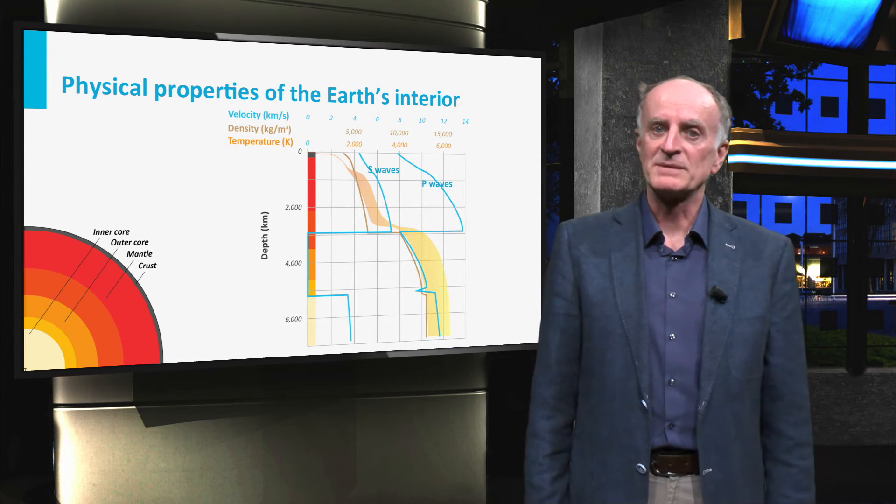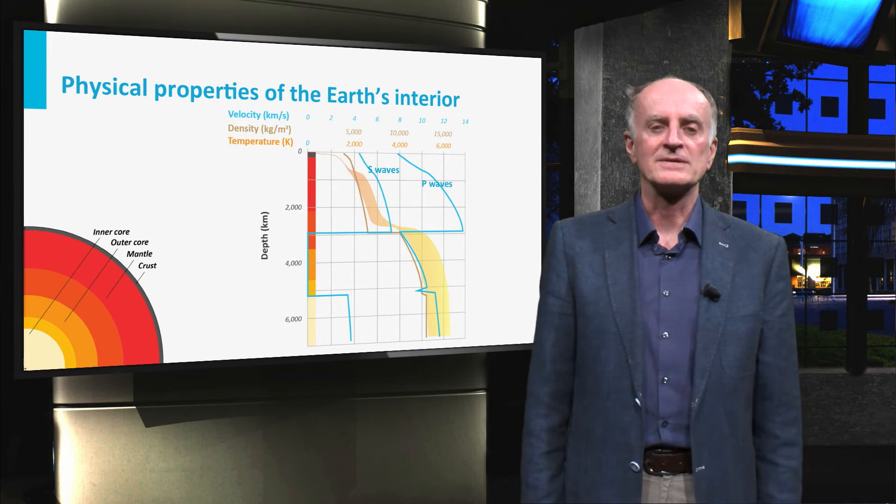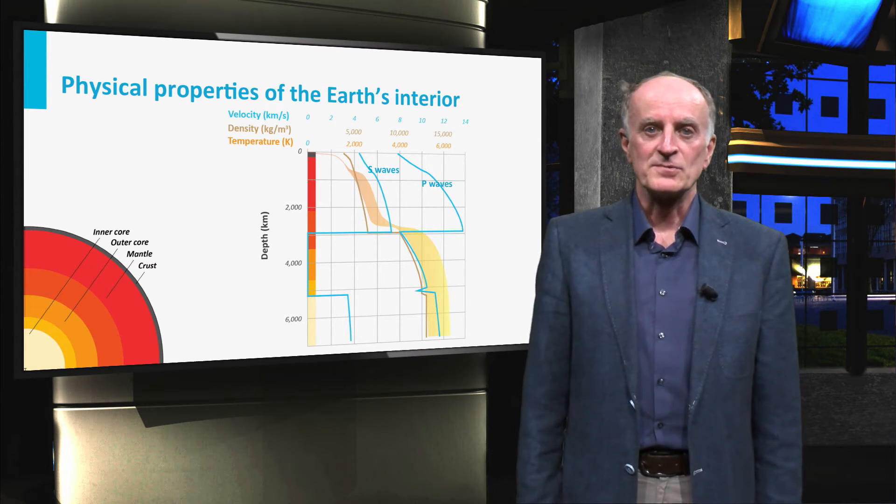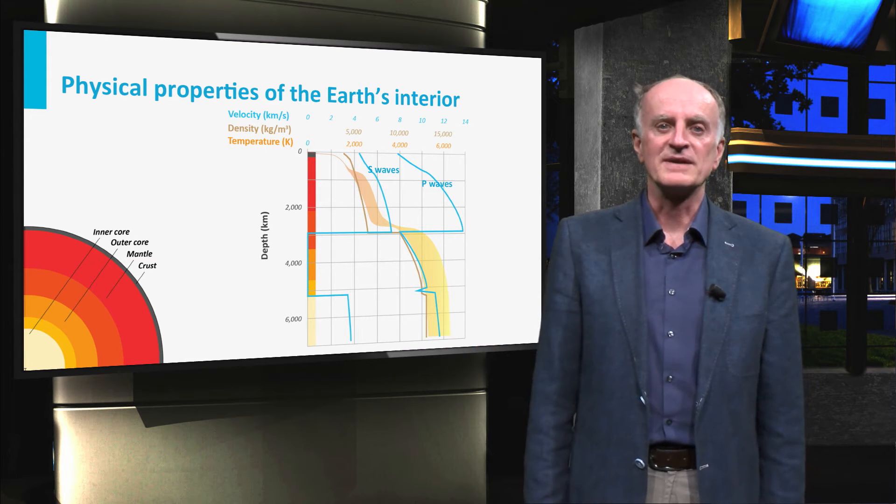S waves have a similar behaviour but nearly disappear underneath 3000 km. Rocks between 3000 and 5000 km must be in a partially liquid phase.